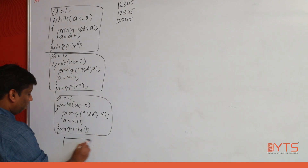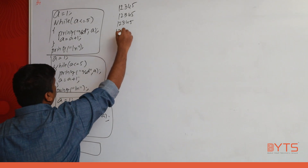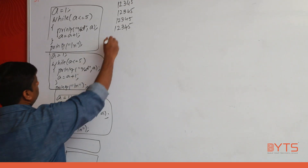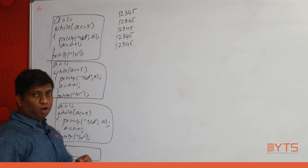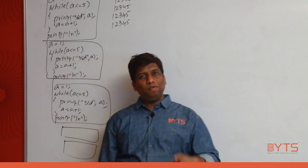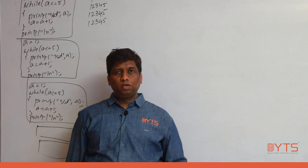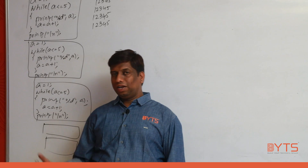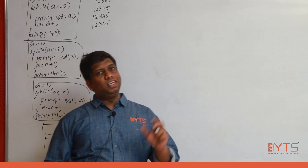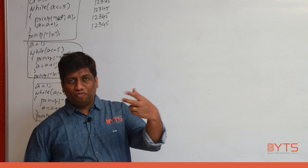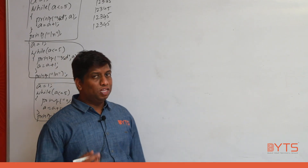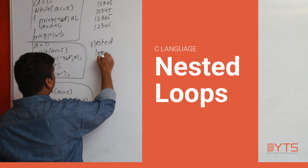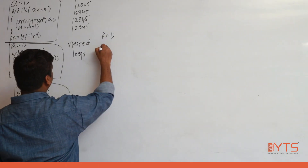If I want to print 1–5 one more time, I need to write it one more time. Very important point: to print 1–5 once, I need one loop. To print 1–5 five times, I need five loops. Whenever a piece of code is repeated we go for a loop, but here the loop itself is repeated — that concept is called nested loops.